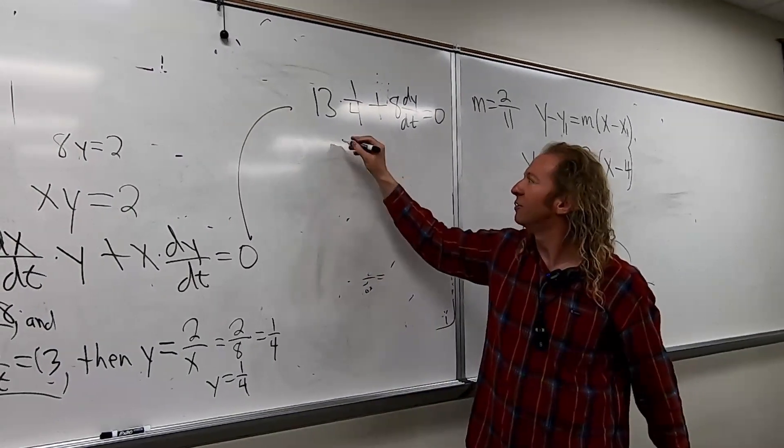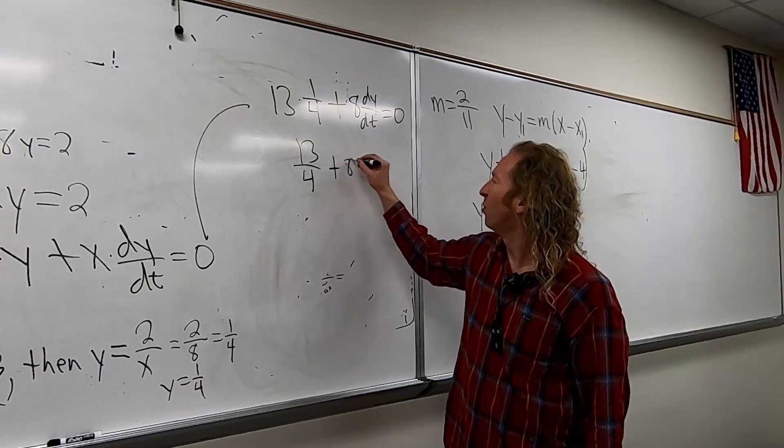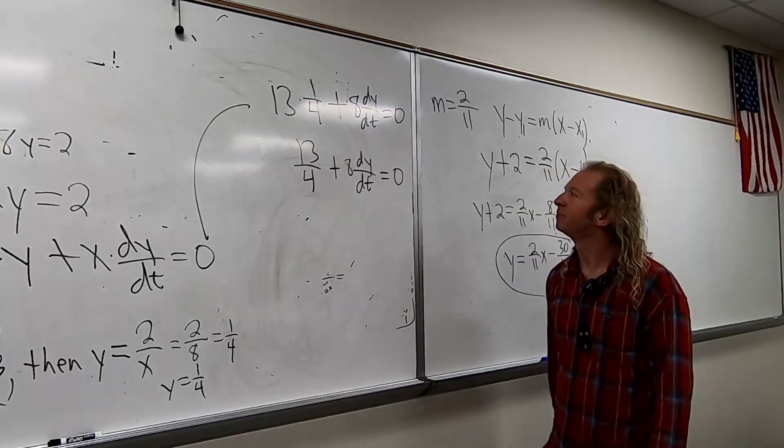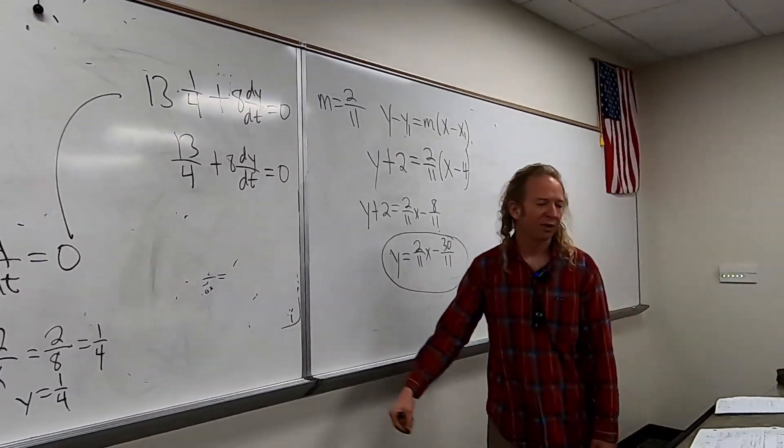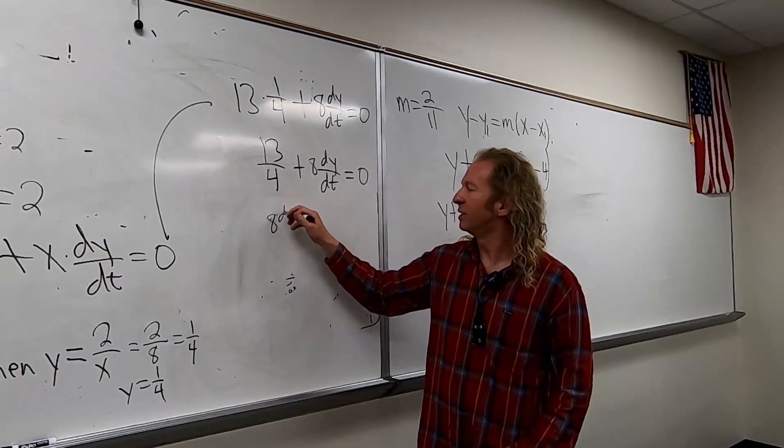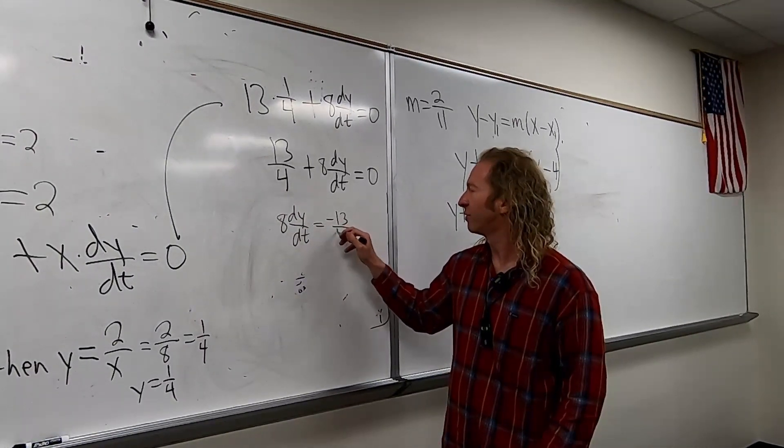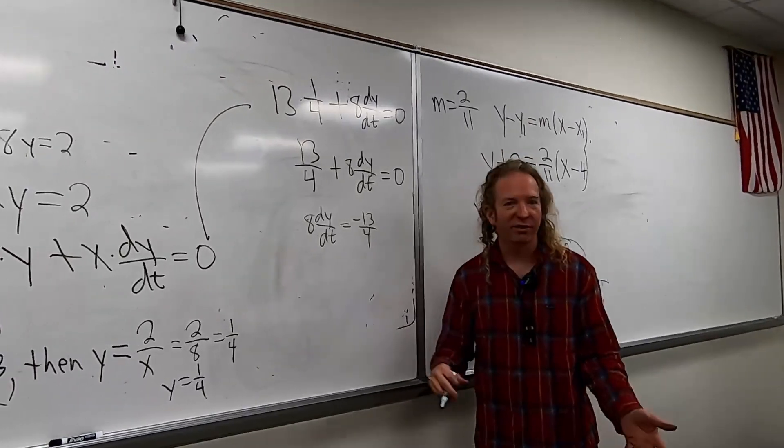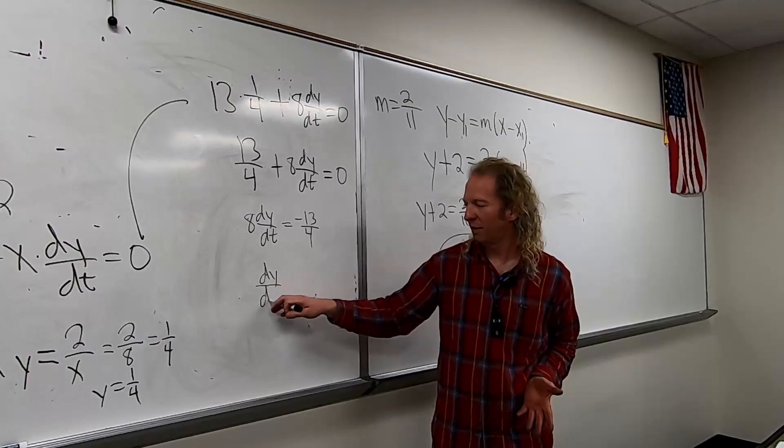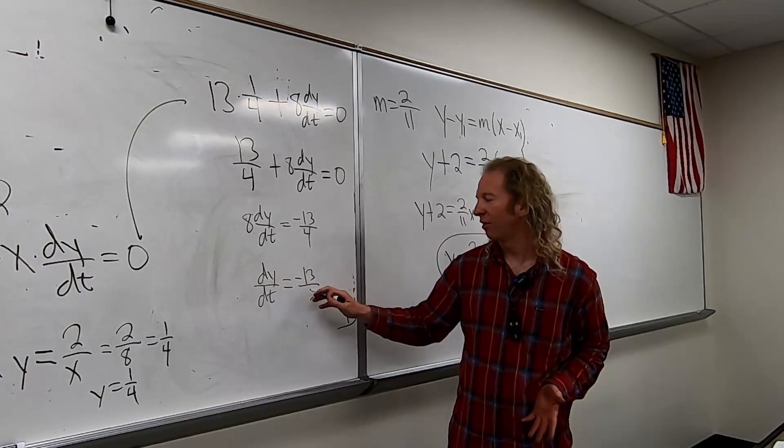Okay, so this will be 13 fourths plus 8 dy/dt equal to zero. So subtract 13 fourths, so you get 8 dy/dt equal to negative 13 fourths. Multiply by 1 eighth or divide by 8. That will give us dy/dt equals negative 13 over 32.